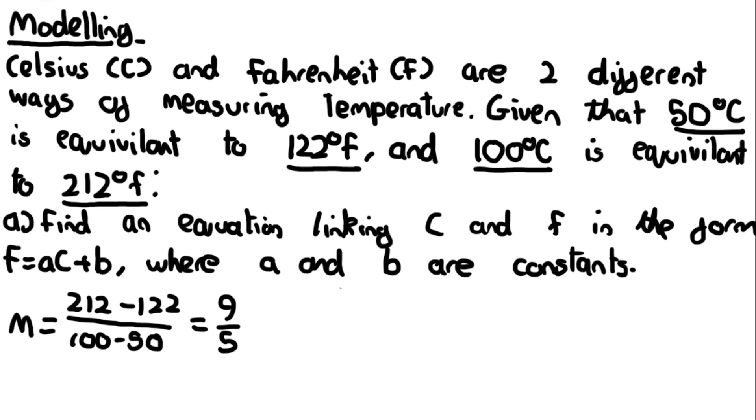Now we've got the gradient, we can use the formula y minus y1 equals m times x minus x1. Remember that we're treating Fahrenheit as the y variable and Celsius as the x variable.